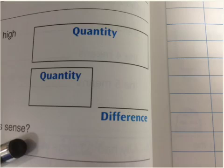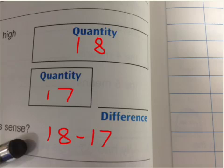So there are 18 students in 3B, so 18 goes there. There are 17 students in 3A, so 17 goes here. And to figure out the difference, you just subtract. And it's a very easy problem. The answer is 1. So there's one more student in 3B than 3A.